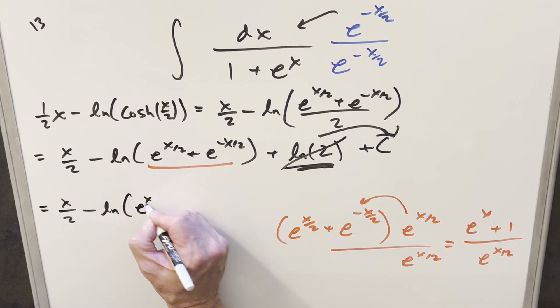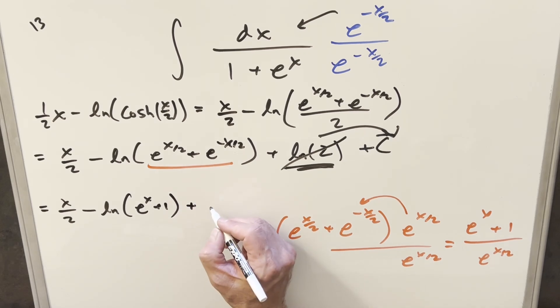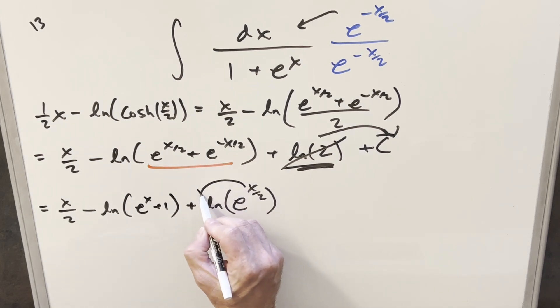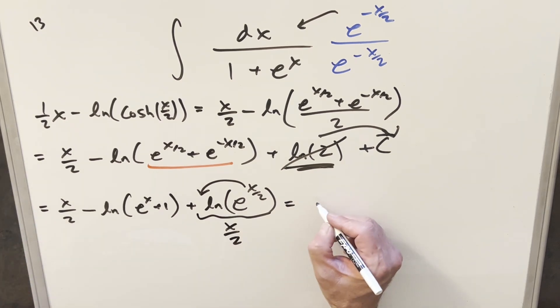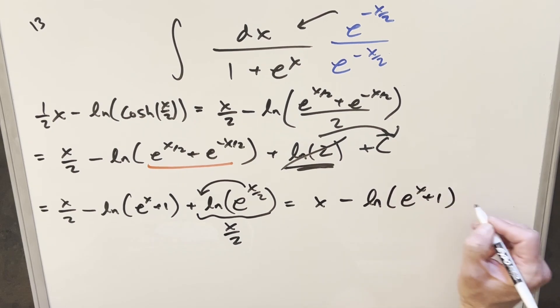Then again, for the denominator splitting up, we're going to have minus natural log of this. But minus times minus is plus. We're going to have plus natural log e x over 2. But then here, we can just take this out front using log properties. And then what's left here is natural log e is just 1. So this whole thing right here just becomes x over 2. And then what I can do, adding x over 2 to x over 2, that's just going to be x minus natural log e to the x plus 1.